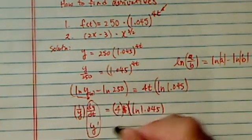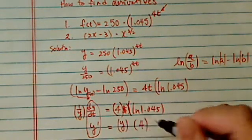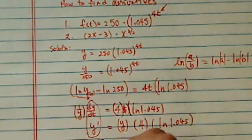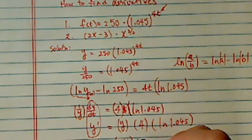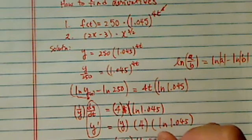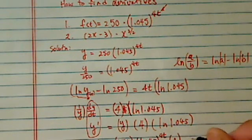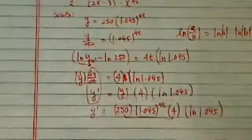Equal to y times 4 times natural log of 1.045. Now, that's one more step. We're going to put a y back in there. So we have 250 times 1.045 to the 4t times 4 times natural log of 1.045. Okay, you can combine this one. That should give you a thousand on that one.